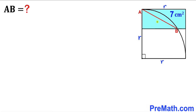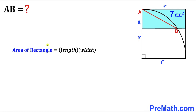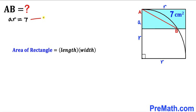Now let's focus on this blue shaded rectangle. One of its side lengths is lowercase r. Let's label its other side length as lowercase a, and recall the area of a rectangle formula: Area equals length times width. In our case the length is r and the width is a, giving us 7 centimeters squared. So we can write a times r equals 7.